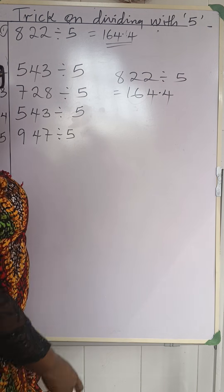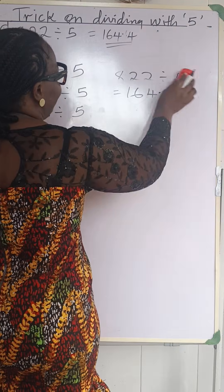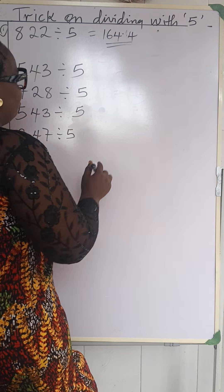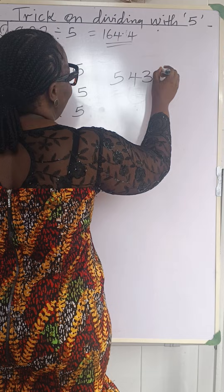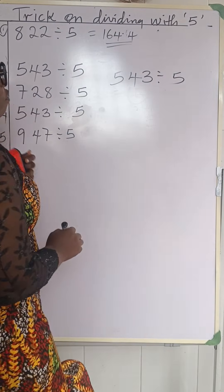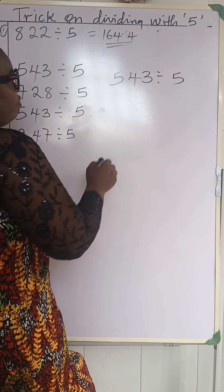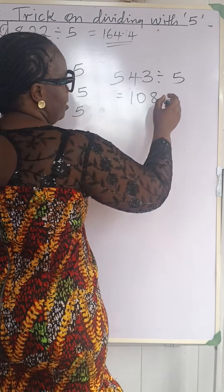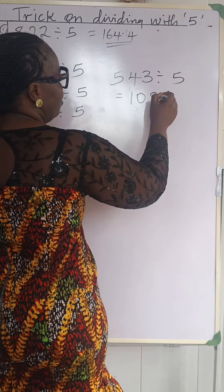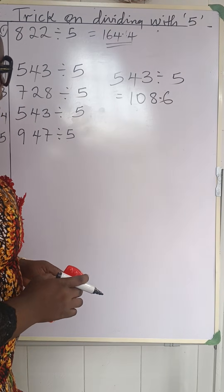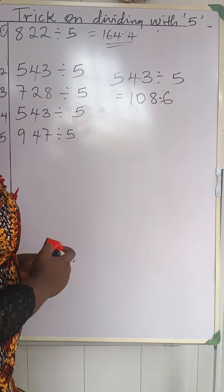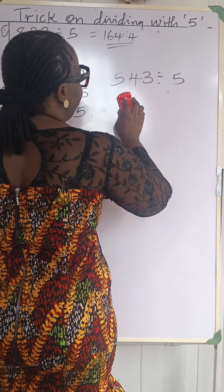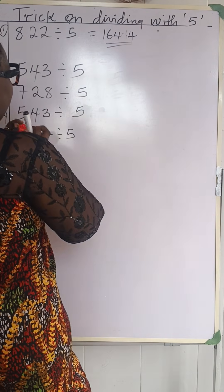Did you see the trick? Now let's do the second one. We have 543 divided by 5. We double the 5 which is 10, double the 4 which is 8, and double the 3 which is 6. Put your decimal point here and that gives us 108.6. You can check through the longer route as we did in the first one and you'll still arrive at this answer. So our answer is 108.6.